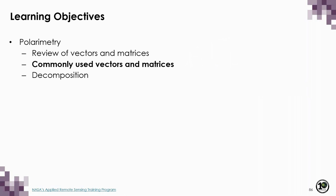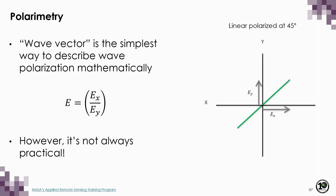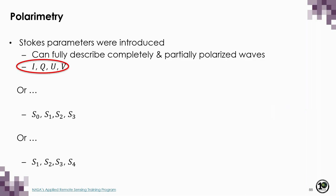Now let's talk about some different ways to characterize data using common vectors and matrices. The wave vector is the simplest way to describe wave polarization mathematically, but it is not always the most practical. The Stokes vectors fully describe both fully and partially polarized waves and are usually stored as a vector with elements I, Q, U, and V — or using S with subscripts. For a single pixel, these four values are stored in four different image bands. The first element, I, is simply equal to the total wave power or intensity — the total energy in the wave, equal to amplitude squared, with averaging applied over time when waves are partially polarized.